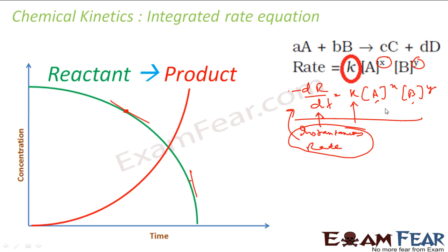We can use some maths — we have learnt this kind of equation in maths. We will integrate this differential rate equation. With this we will get a relationship between concentration at different times and the rate constant. Because finding d[R]/dt is difficult when doing the experiment at different points of time, to avoid this we will integrate the whole equation and get a better relationship.